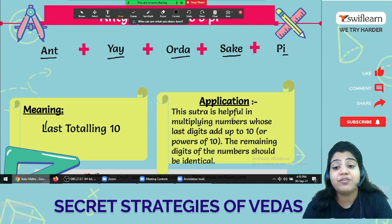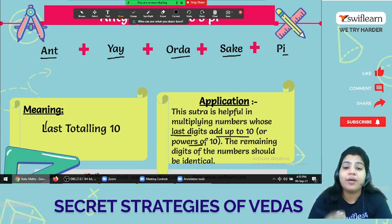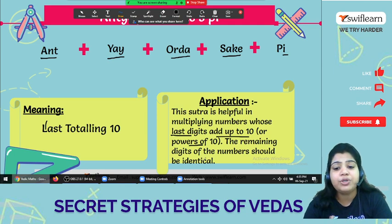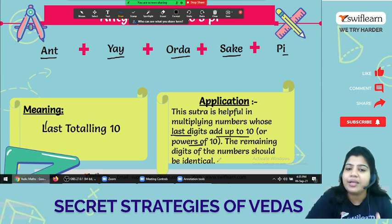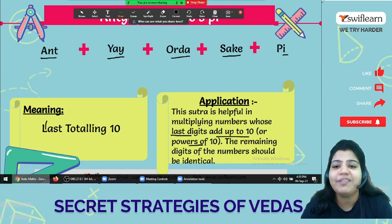As you can see in application, the sutra is helpful in multiplying numbers whose last digit add up to 10 or power of 10. It can be 100, 1000, 10,000, lakh, anything. The remaining digit of the number should be identical, so the starting number should be same.